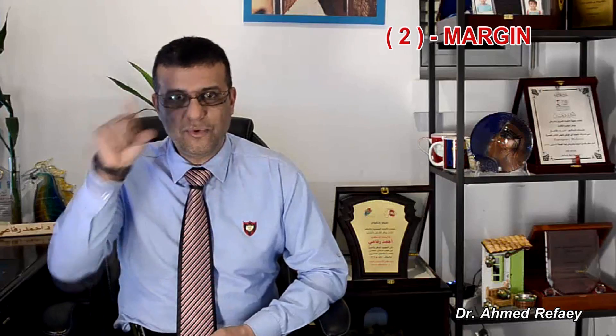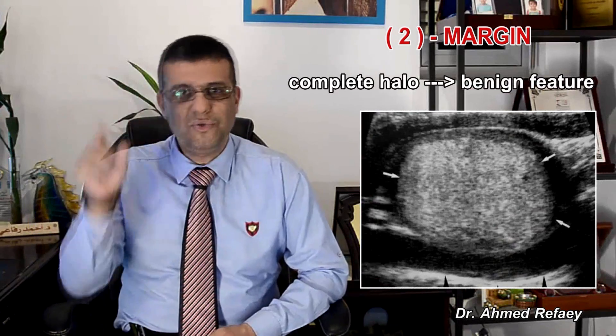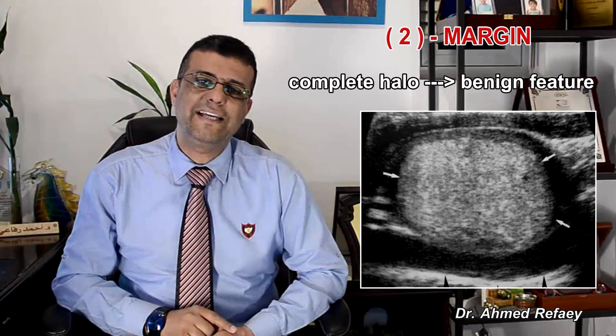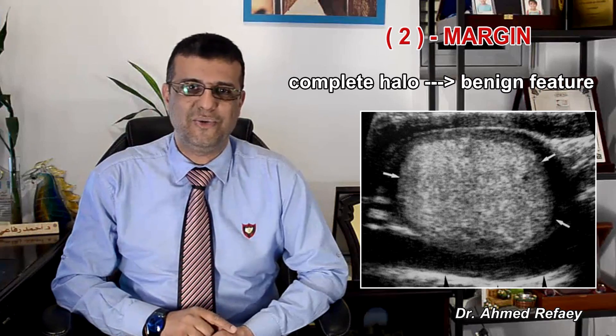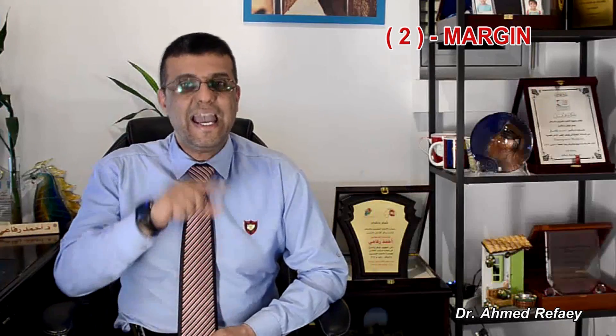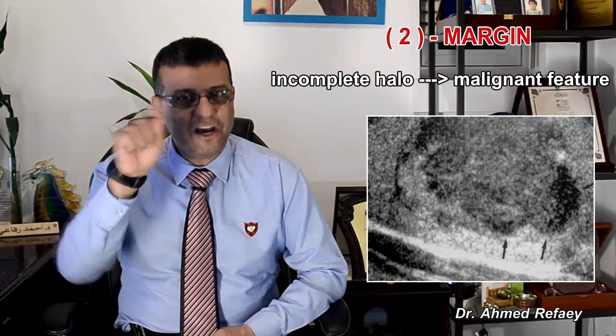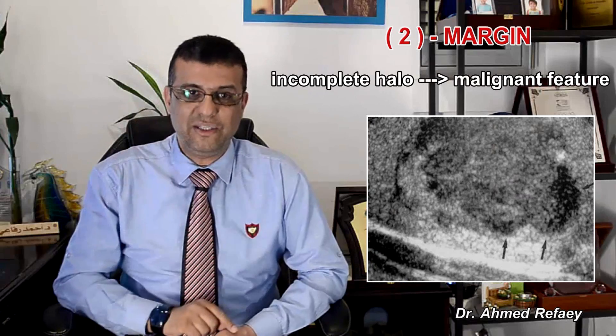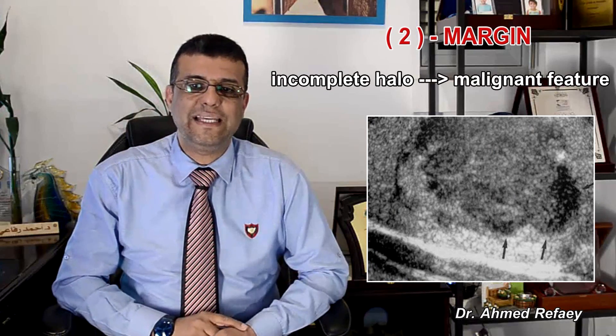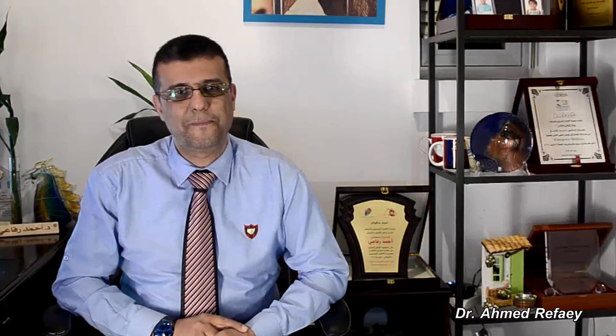Number two, margin of the nodule. Check for a peripheral halo of decreased echogenicity around the nodule. A complete halo usually indicates a benign nodule, while an incomplete halo — even in part of a nodule — usually indicates a malignant nodule.